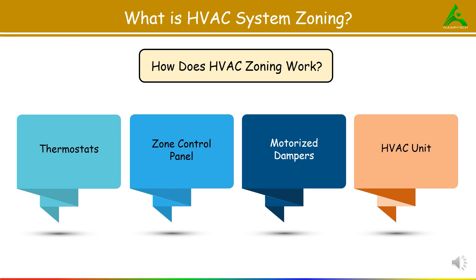Let's look at an example of HVAC zoning for residential use. Imagine a two-story home — on the first floor we have a living room, kitchen and dining area, and on the second floor we have bedrooms and bathrooms. In zone one we consider the first floor living areas, and zone two covers the second floor bedrooms. During the day, the family spends most of their time on the first floor, so the system can cool or heat zone one while zone two remains inactive. At night, the focus shifts to zone two for comfortable sleeping conditions, and zone one temperature can be allowed to drift. This is the basic design of zoning.